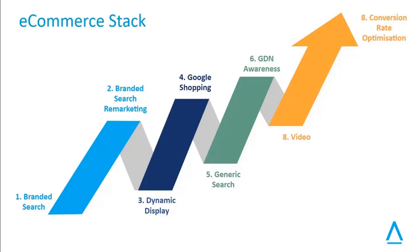Then there's generic search. We've spoken about branded search, which is people searching on your branded keywords, but then there's a whole bunch of generic search terms that you may want to go after. For example, if you're selling beds and mattresses, it might be that you create campaigns that specifically target bed sets and mattress keywords. Then we have Google Display Network, which is really just an awareness channel where you can serve massive impressions to people with a rich visual ad and make sure that your funnel is always full with new visitors.